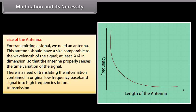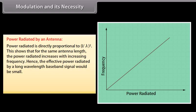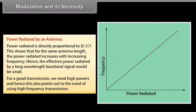Therefore, there is a need to translate the information contained in the original low frequency baseband signal into high frequencies before transmission. Power radiated by an antenna is directly proportional to (L/λ)². This shows that for the same antenna length, the power radiated increases with increasing frequency. Hence, the effective power radiated by a long wavelength baseband signal would be small. For good transmission, we need high powers, which also points to the need for using high frequency transmission.